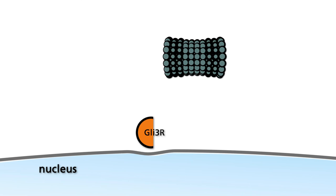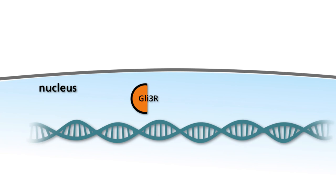After entering the nucleus, GLI III R binds to the DNA, where it represses hedgehog-responsive genes.